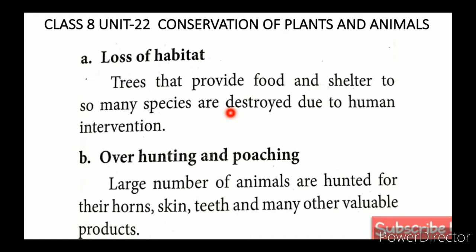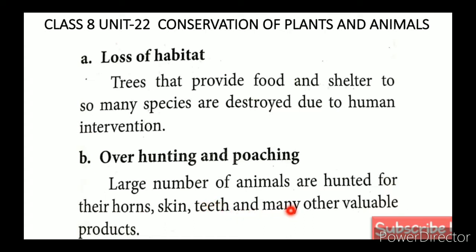Another cause is overhunting and poaching. Hunting for food and games is legal, but poaching is illegal — that is the difference. When hunting is banned by the government, killing animals is called poaching. Large numbers of animals are hunted for their horns, skin, teeth, and many other valuable products.